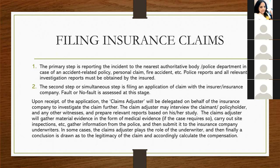Depending upon the replies given by the claimant, the claims adjuster will gather material evidence — for example, medical evidence in cases that require it, or carry out site inspections in cases where property has been damaged by fire. Information is also gathered from the police and then submitted to the insurance company underwriters. In some cases the claims adjuster plays the role of the underwriter, and finally a conclusion is drawn as to the legitimacy of the claim and compensation is calculated.